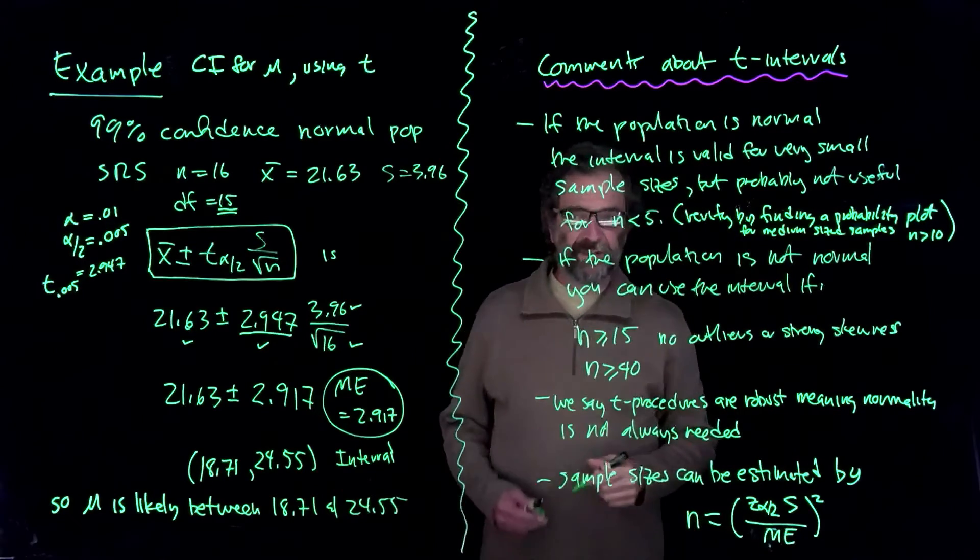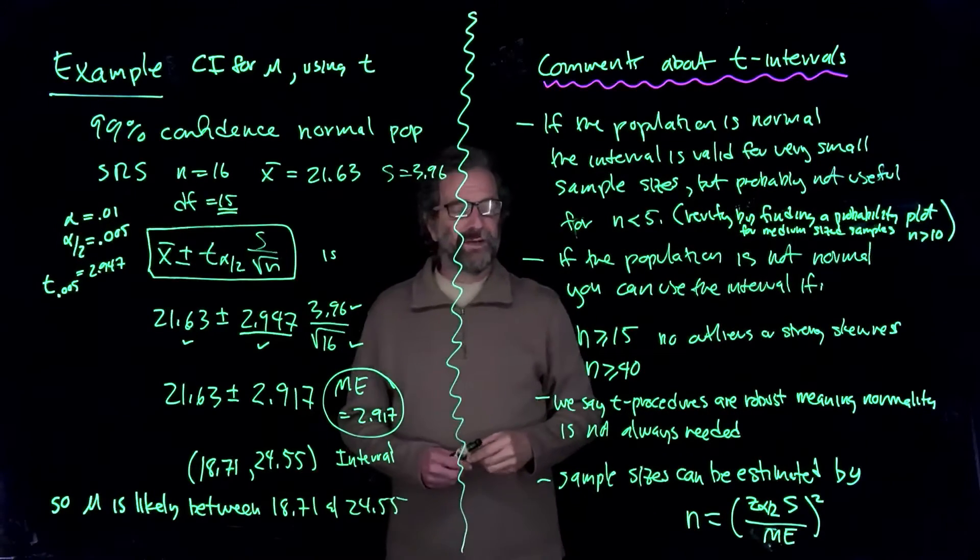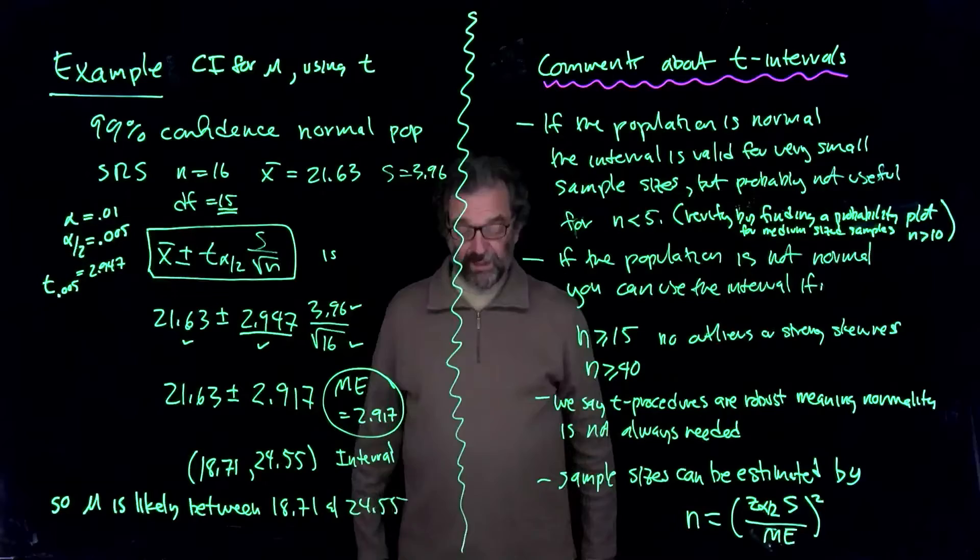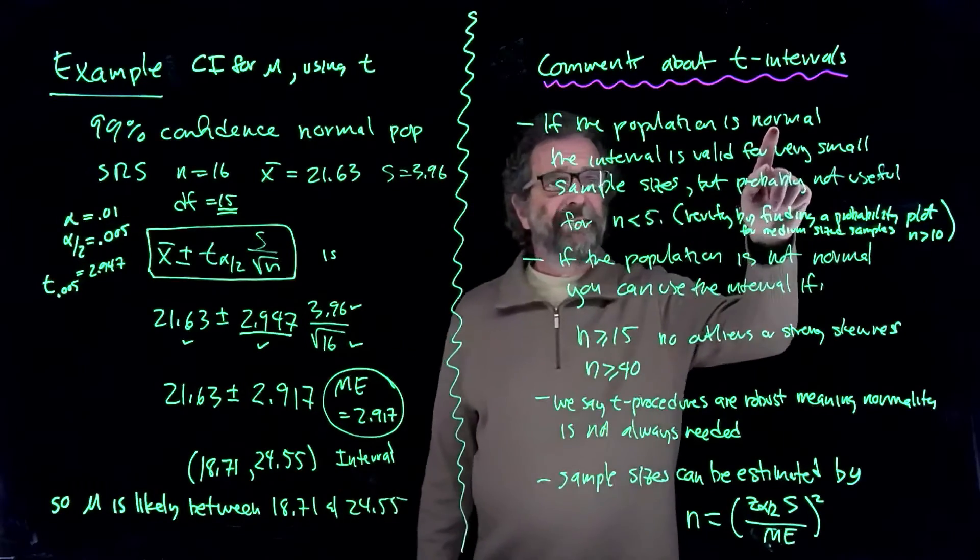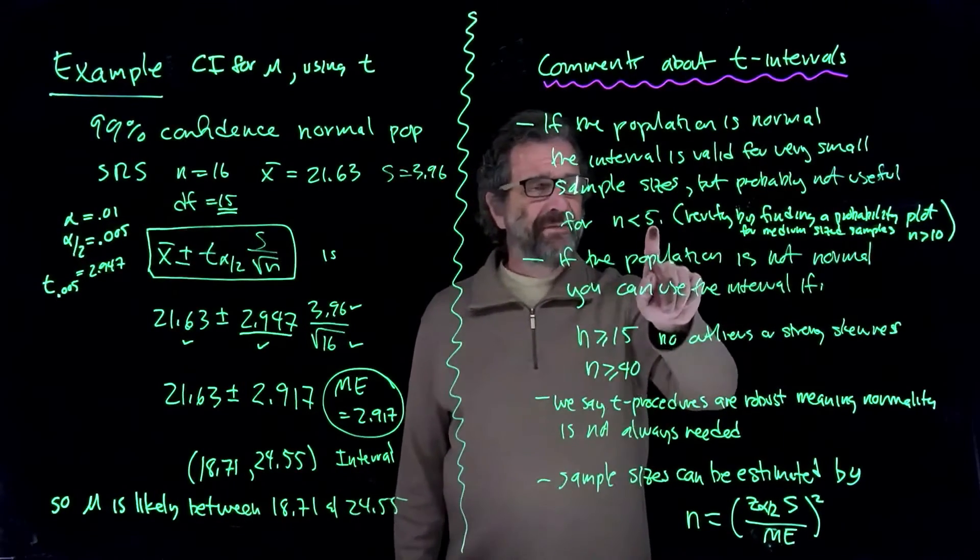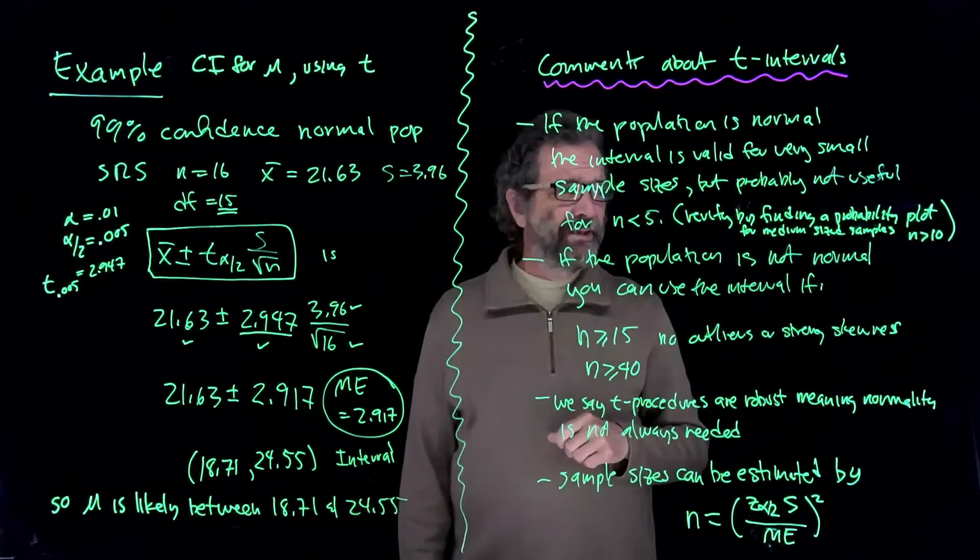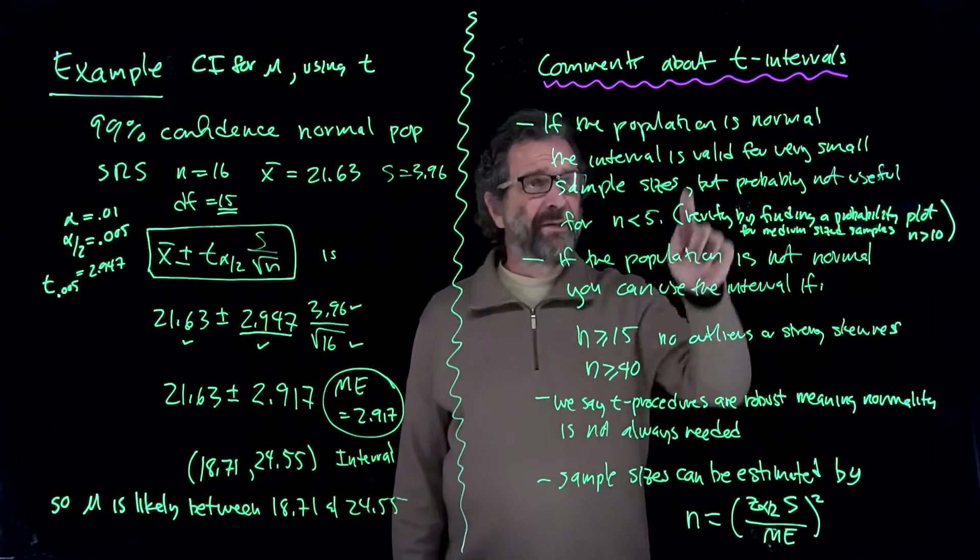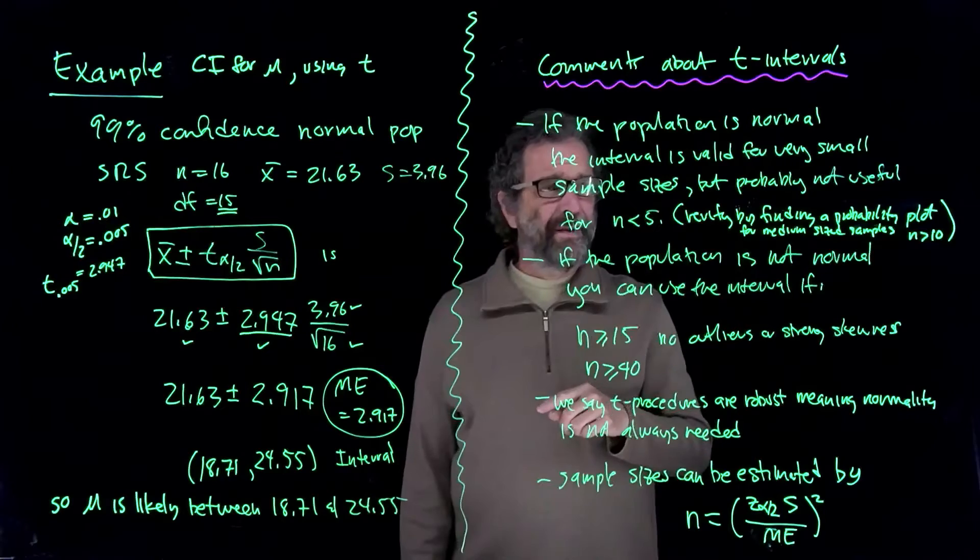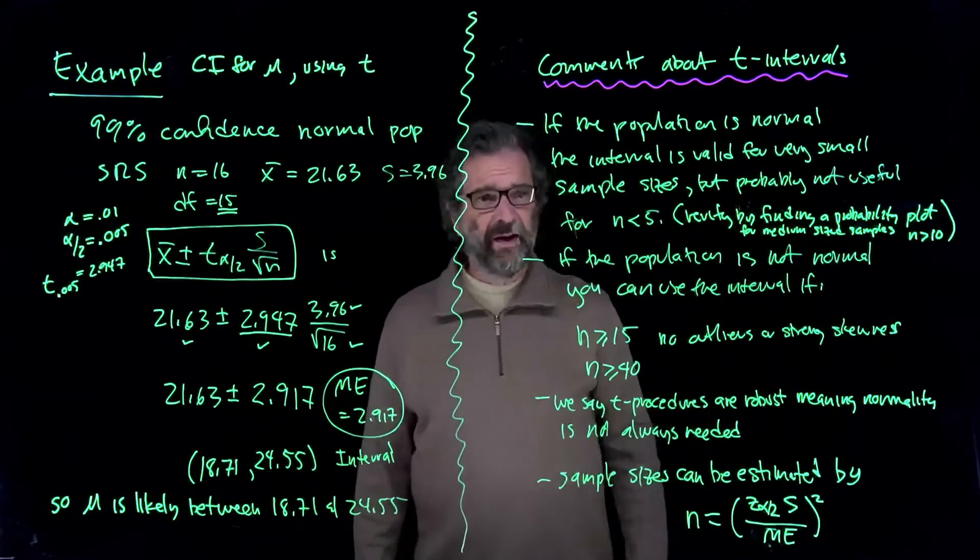If it's too small, it's going to be hard to do. And so if you knew the population was normal, if n is less than 5, the probability plot is not going to tell you what you need to know. But you might know in advance you're sampling from a normal population, n is less than 5.